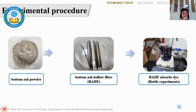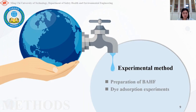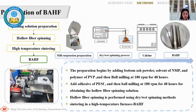The experimental procedure involves pre-treating the biochar powder and then manufacturing hollow fiber membranes for dye adsorption. The experimental method begins with the preparation of biochar powder.